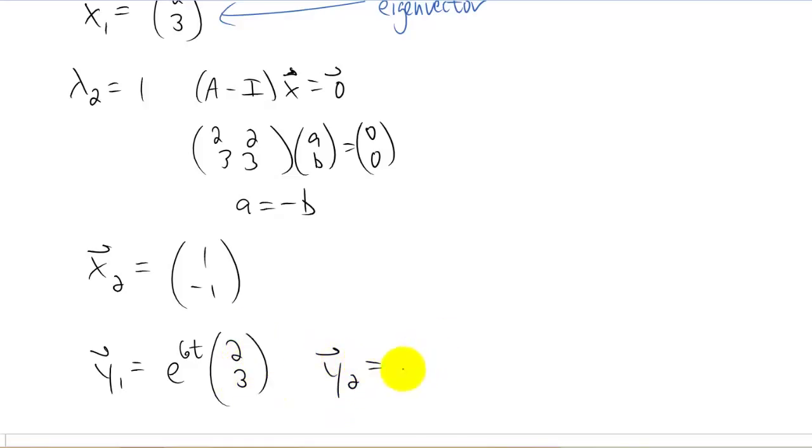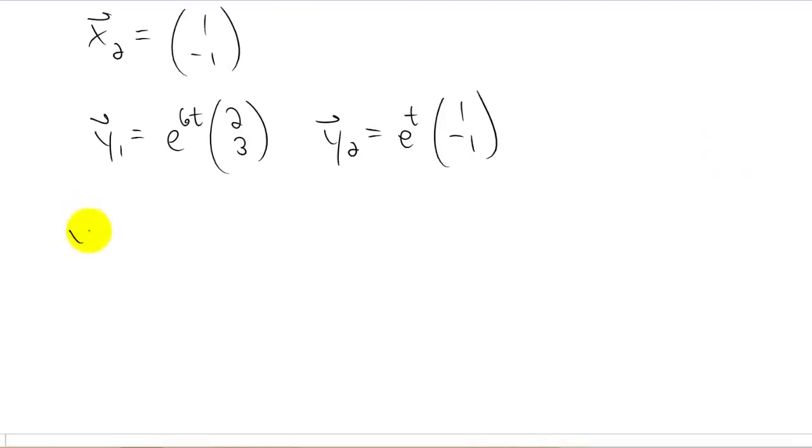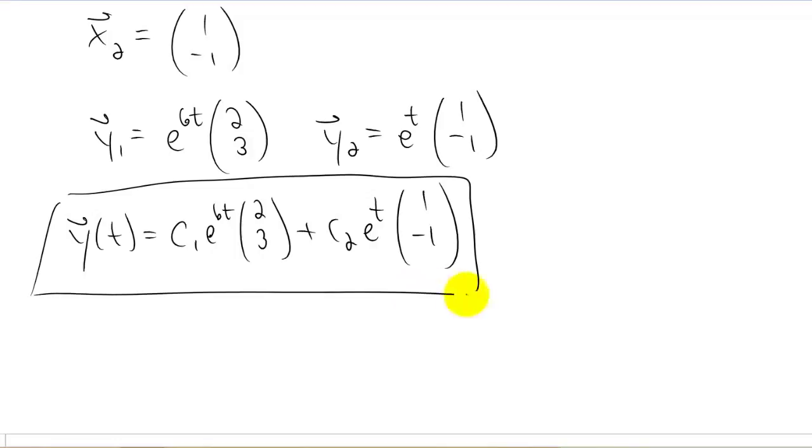Our second solution to our system of differential equations is e to the t, one, negative one. Now, if you're looking for a general solution to the system of differential equations, you just combine your y one and your y two in linear combinations here, and you have yourself a general solution to that system of differential equations.